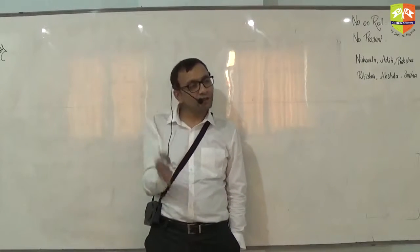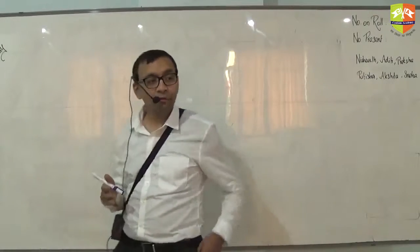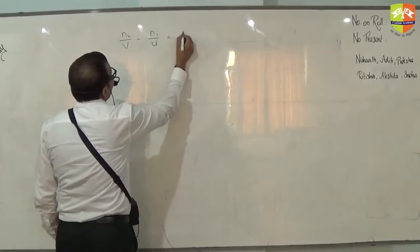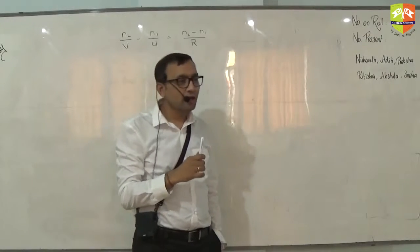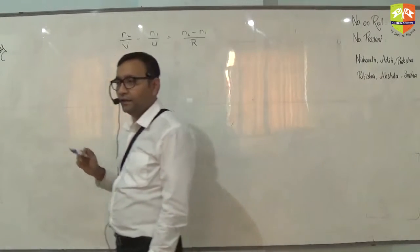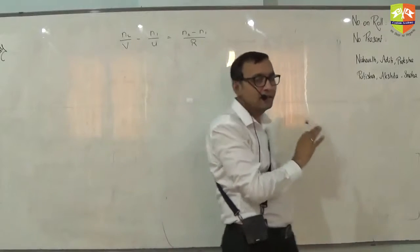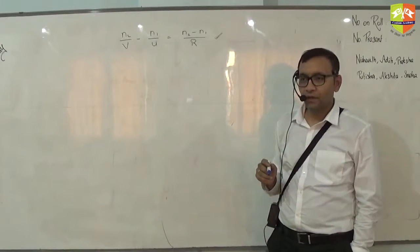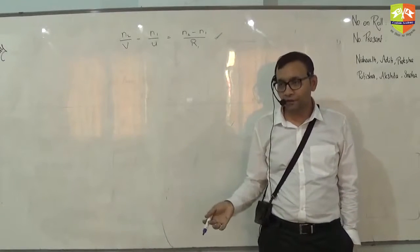Refraction through spherical surface and how spherical surface creates an image. We also derived a formula: n2/v minus n1/u equals n2 minus n1 by r. We discussed this formula and taken few numericals that take care of this scenario. Now we know how to apply this formula. This formula is basically mother of all formulas in refraction because even for the planar surface you can use this - put r equal to infinity and you'll get a formula for planar surface also.